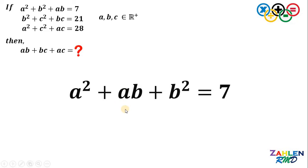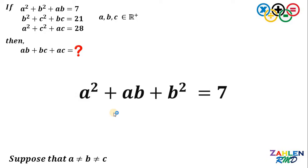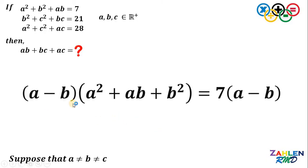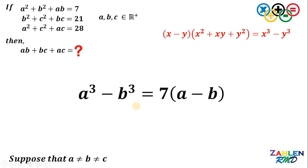We have ab in the middle. At this point, let's suppose that a is not equal to b is not equal to c, so a, b, and c are not equal to each other. Since they are not equal to each other, we can multiply both sides by a minus b, because we know for sure that a minus b is not equal to 0. On the left-hand side, notice that it is a special product: x minus y multiplied by x squared plus xy plus y squared equals x cubed minus y cubed. Therefore, the left-hand side is just a cubed minus b cubed, and on the right-hand side we have 7 multiplied by a minus b.